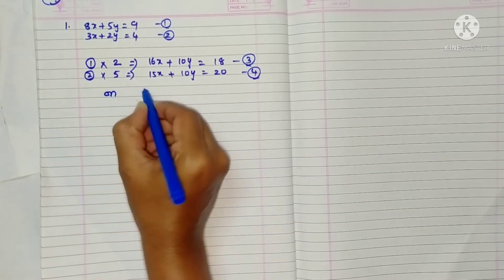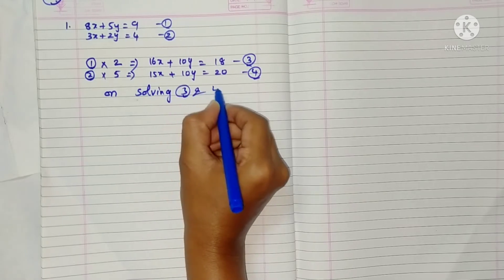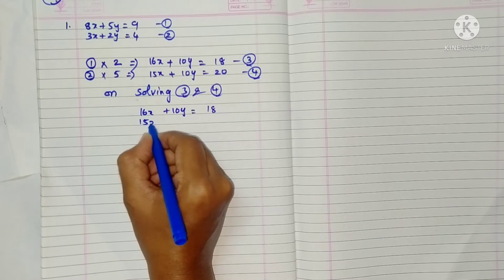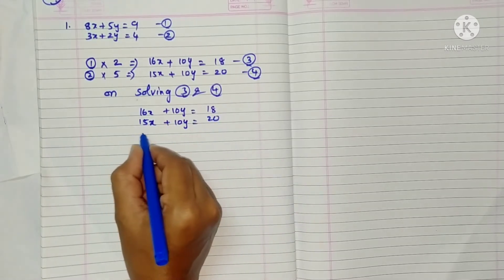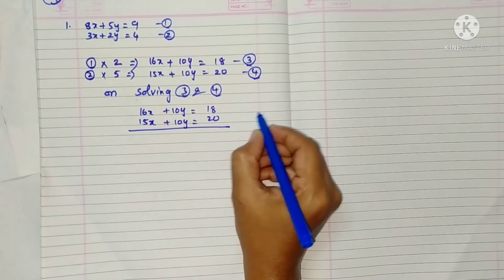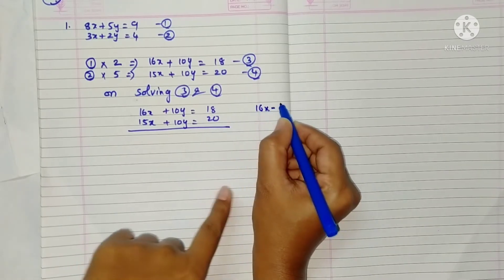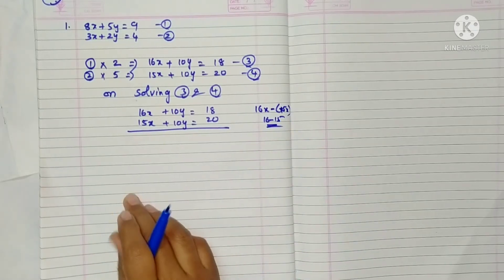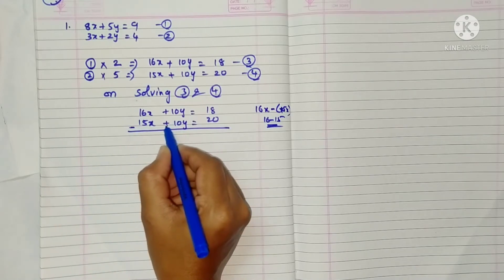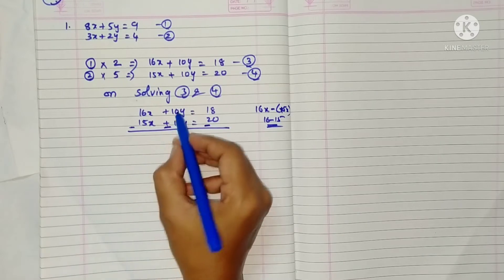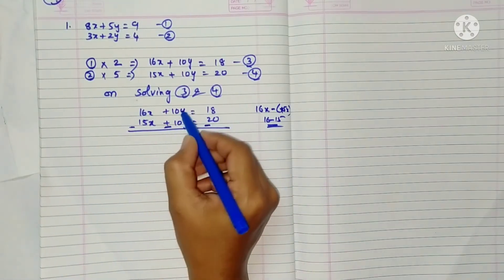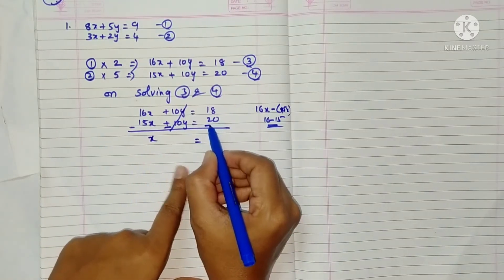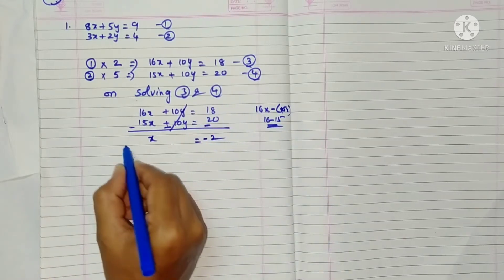On solving equations three and four, the y terms — plus 10y and minus 10y — cancel out to zero. We get 16x minus 15x equals 18 minus 20, which gives x equals minus 2.